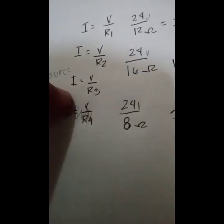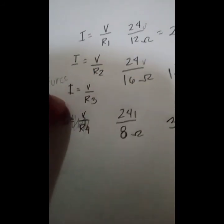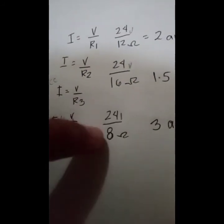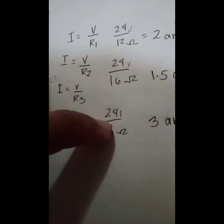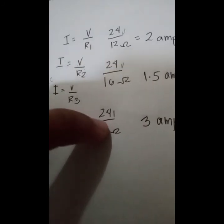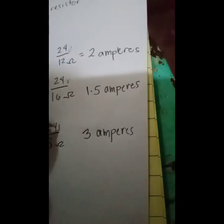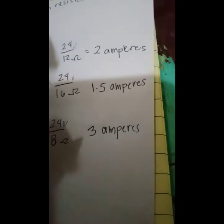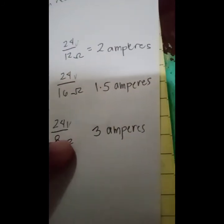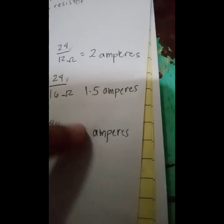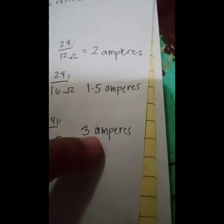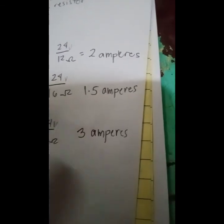For resistor 3: 24 volts over 8 ohms gives us 3 amperes. So that's all — thank you.